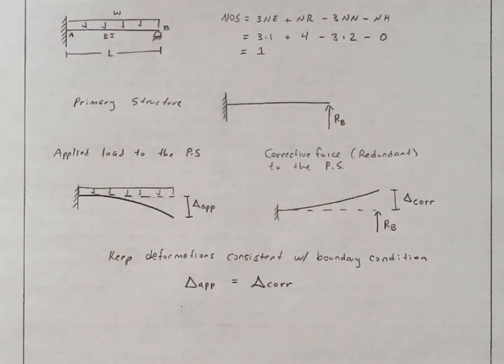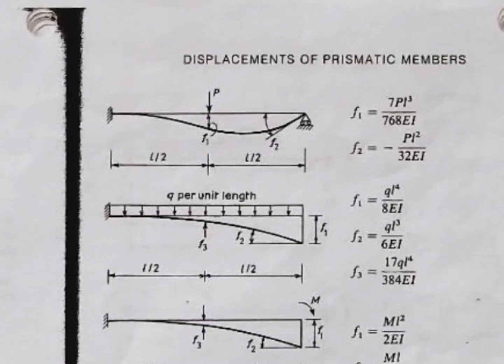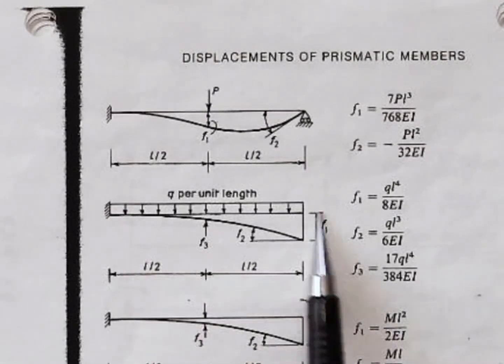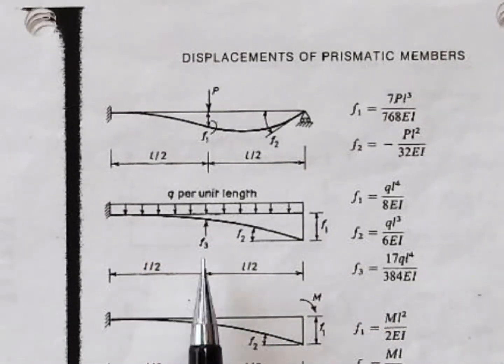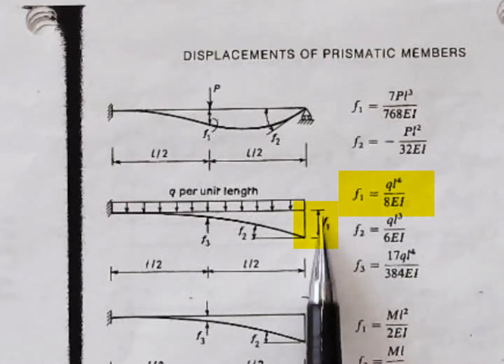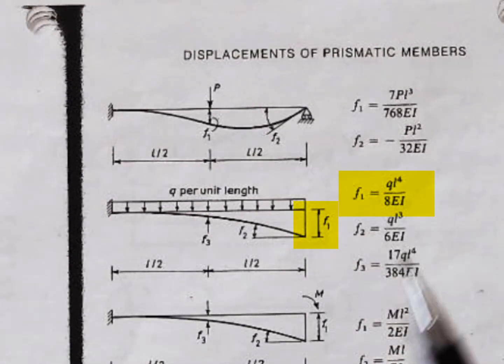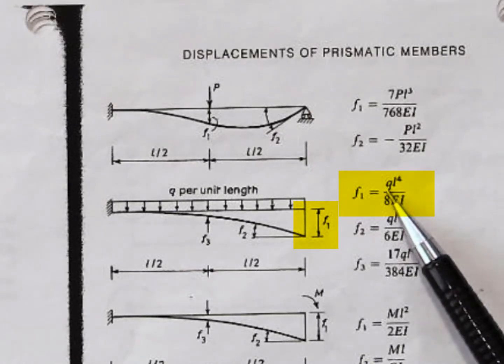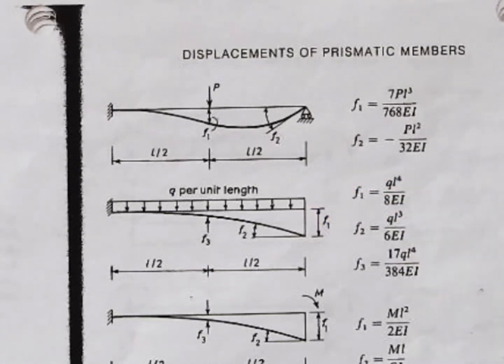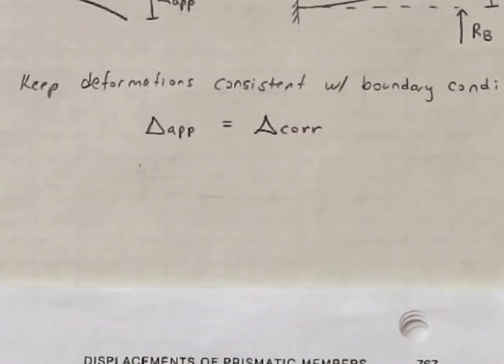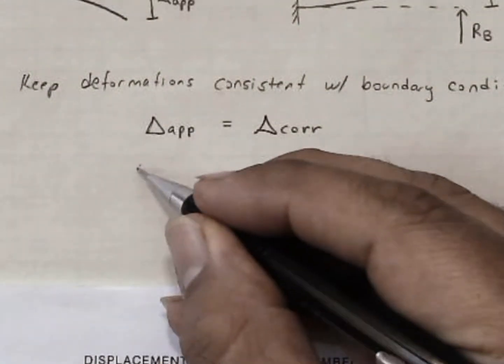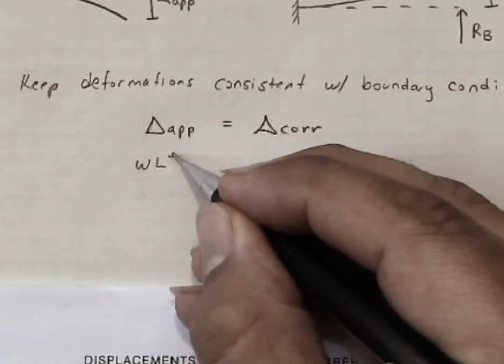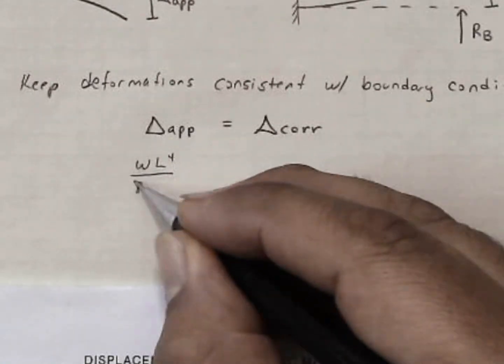First, for the applied load, a uniform load on a cantilever beam, we're interested in this deflection here, F1. And F1 is given as QL to the fourth over 8EI. In our case, the load is W, the length is a capital L, so we'll account for that. And we will write that this is equal to WL to the fourth over 8EI.